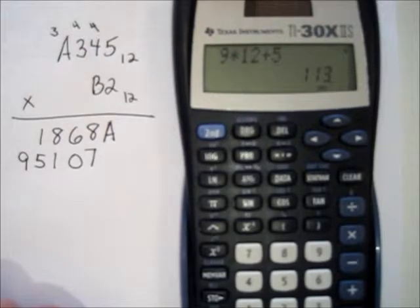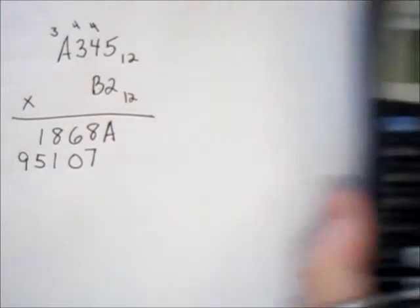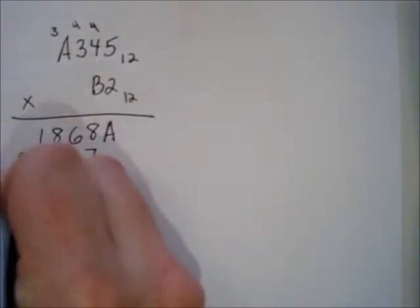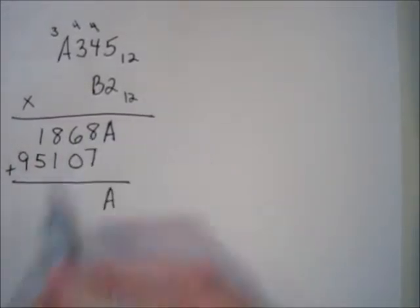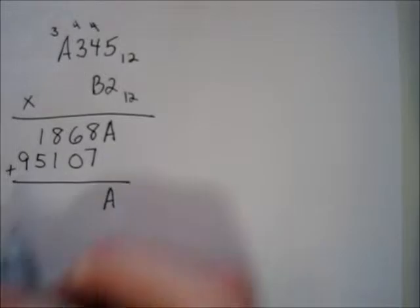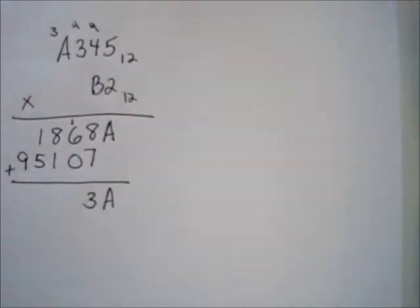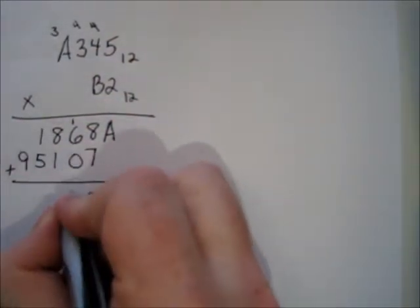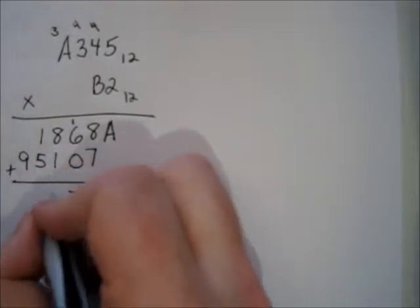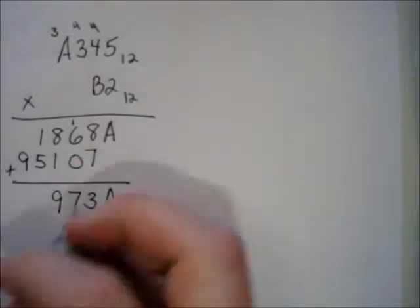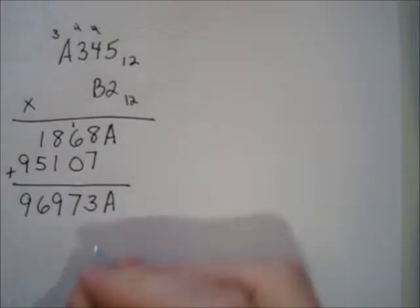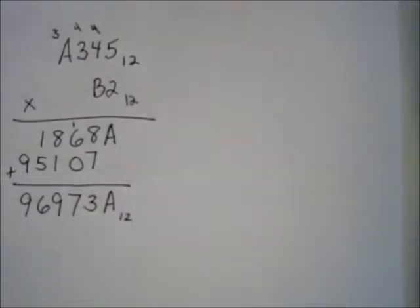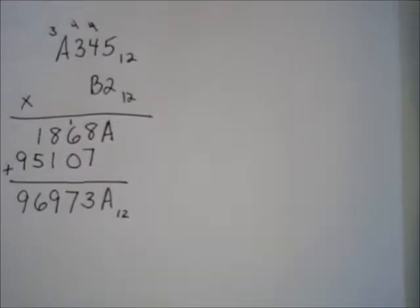Now we add in base twelve. Eight plus zero is eight. Eight plus seven is fifteen — that's one twelve and three left over. One plus six is seven. Eight plus one is nine. One plus five is six. Don't forget the subscript of base twelve. The answer is nine-six-nine-seven-three-A base twelve.